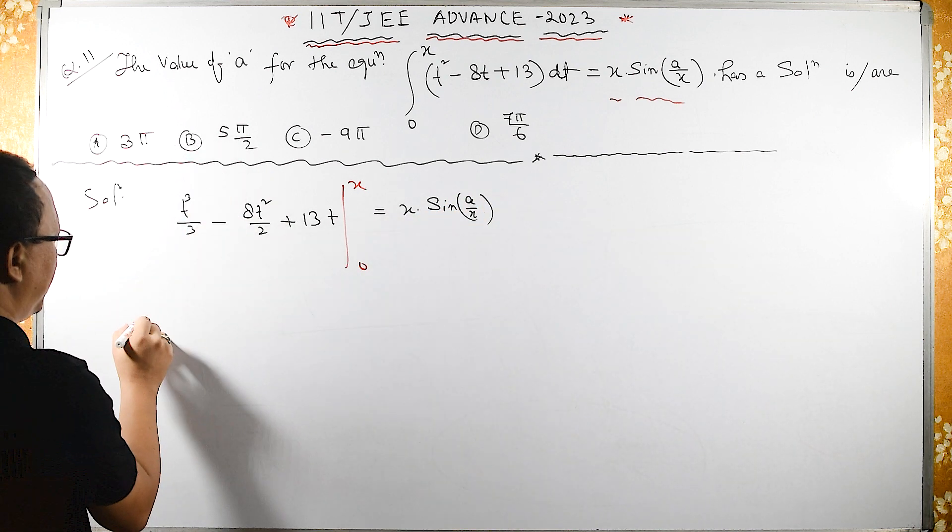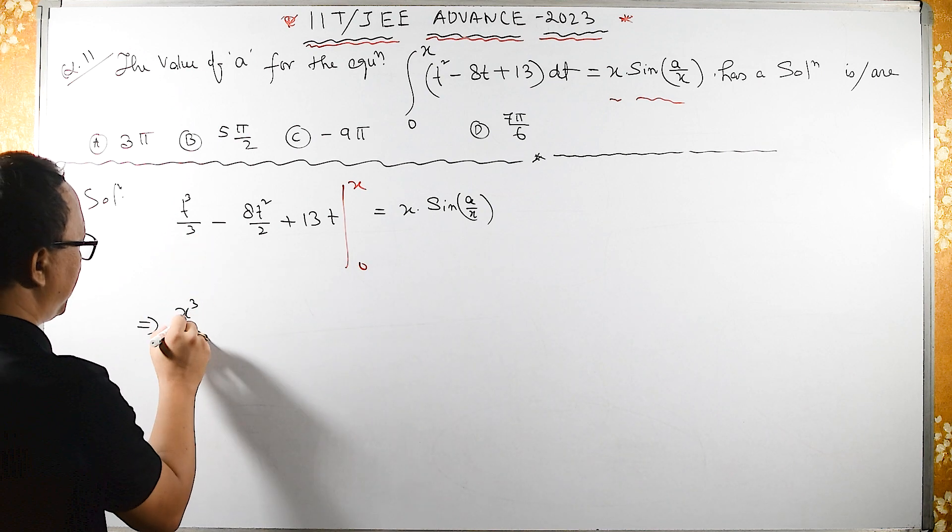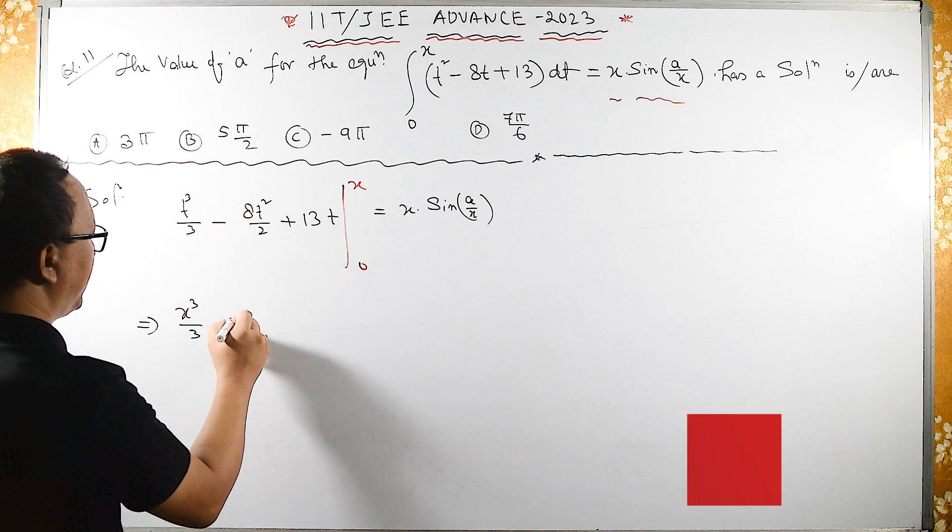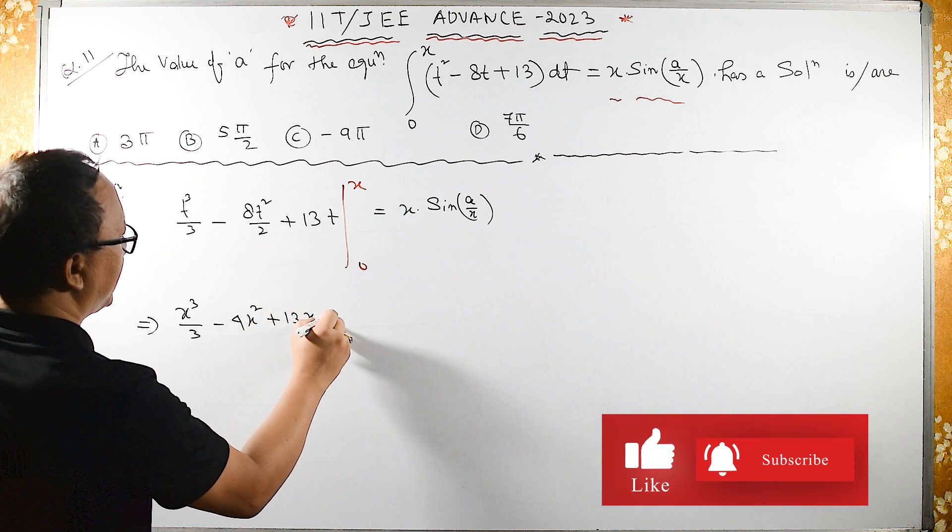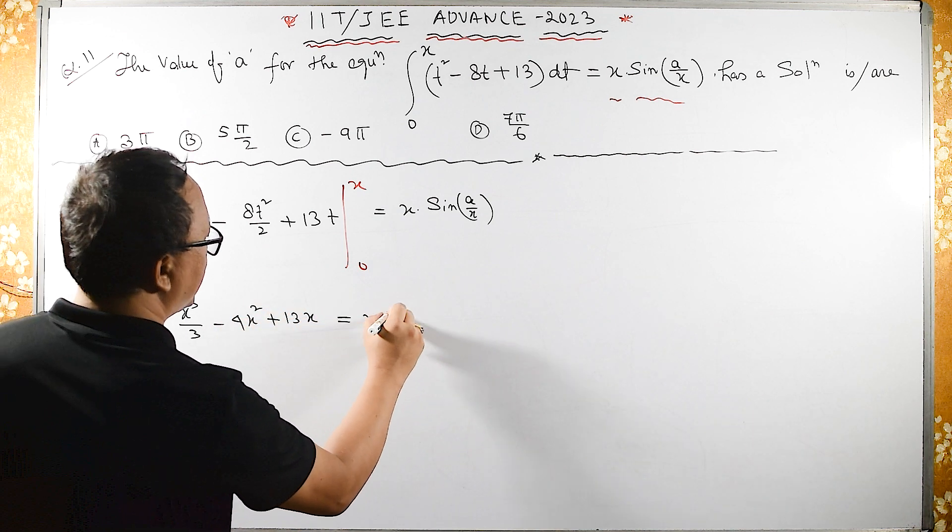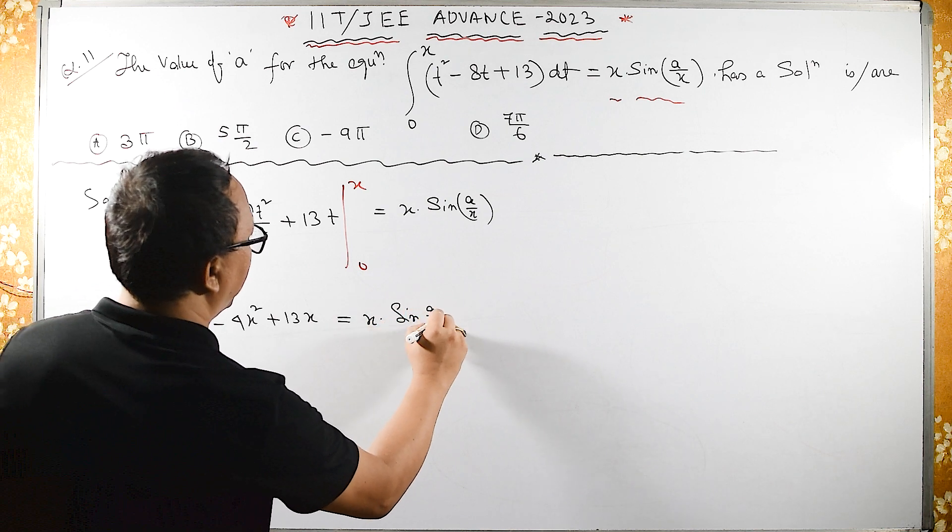Now let us substitute. If I substitute it will become X³/3 - 4X² + 13X equals X·sin(A/X).